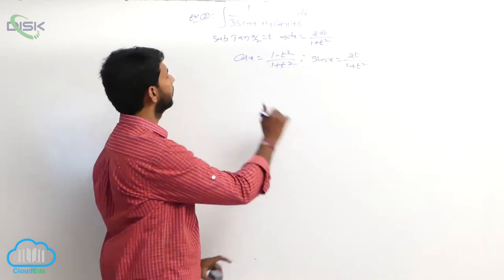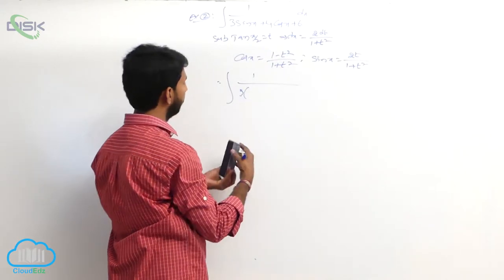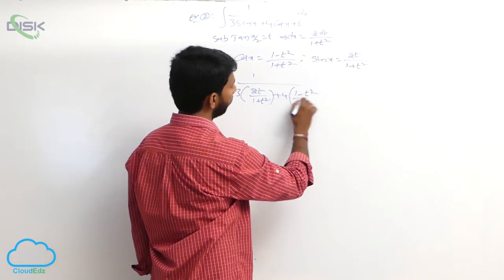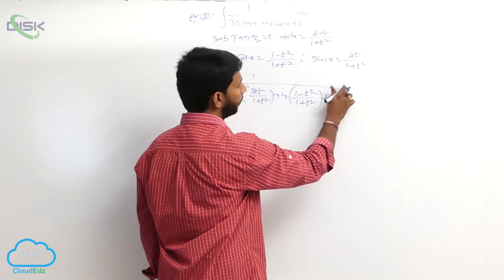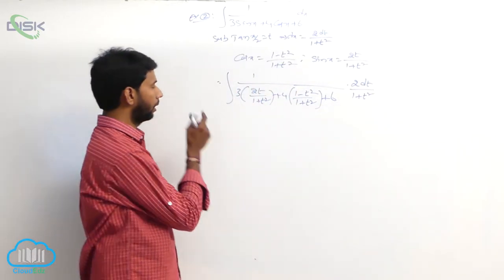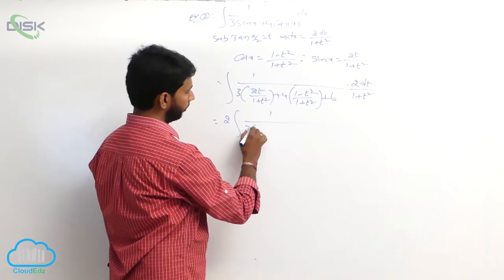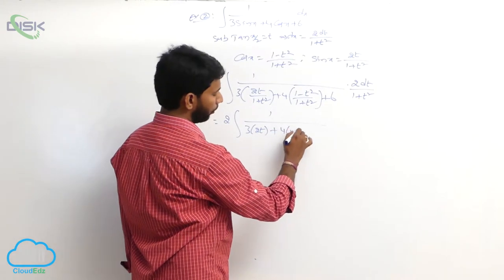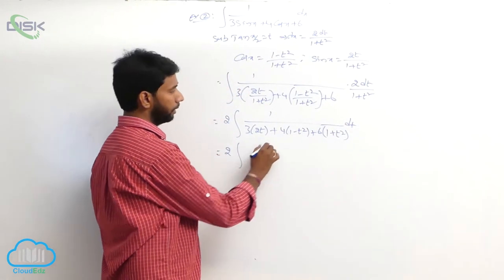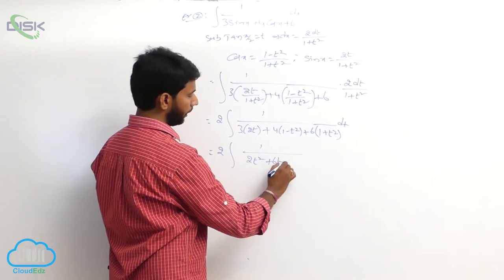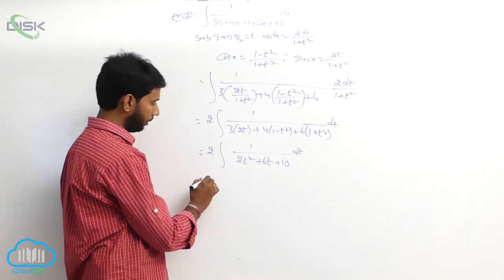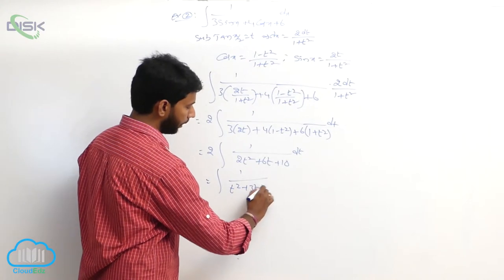Substituting dx, cos x, and sin x: the integral becomes integral of 1 by [3 of (2t by (1 plus t square)) plus 4 of (1 minus t square) by (1 plus t square) plus 6] times 2 dt by (1 plus t square). After taking LCM and simplification, the denominator becomes 2t squared plus 6t plus 10, and factoring out 2 gives integral of 1 by (t square plus 3t plus 5) dt.